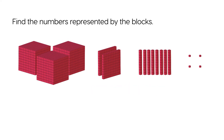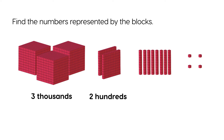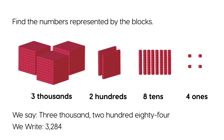Find the number represented by the blocks. Three thousands, two hundreds, eight tens, four ones. We say three thousand two hundred eighty-four. We write three thousand two hundred eighty-four.